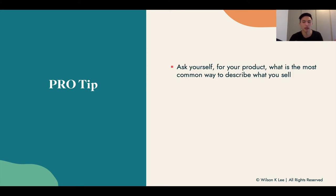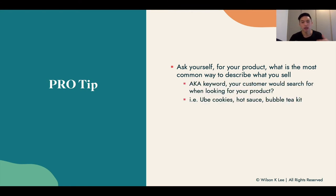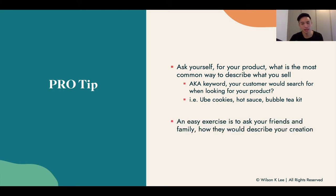A pro tip: ask yourself, what is a keyword that I'm going to use for my business? Ask yourself — for your product, what is the most common way people describe what you sell? For example, it could be ube cookies, it could be hot sauce, it could be bubble tea kit. A very easy example is to ask your friends and family how they would describe your creation. As you ask five to ten of them, you're going to see a pattern emerge — everyone's describing your drink as a 'bubble tea kit.' That's how you'll know what keyword to use for your Instagram bio.